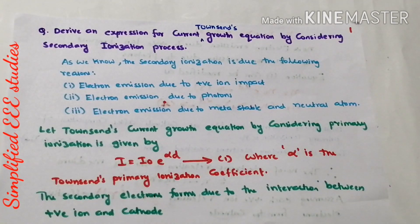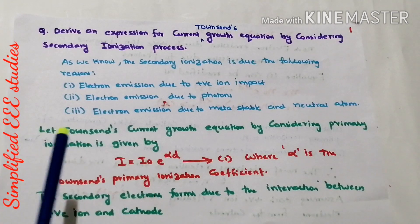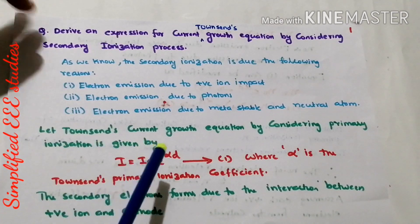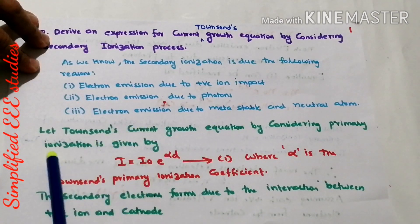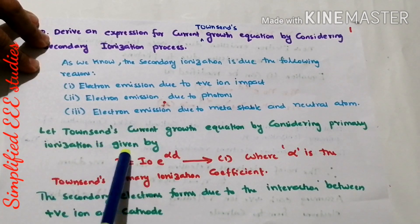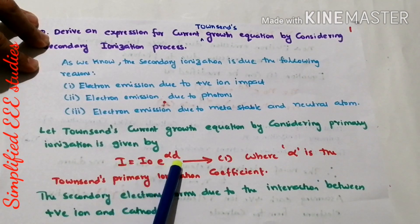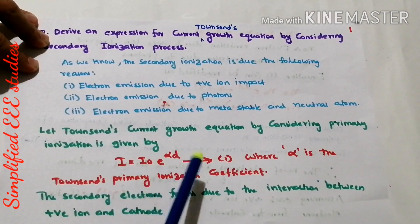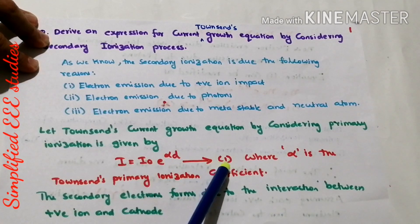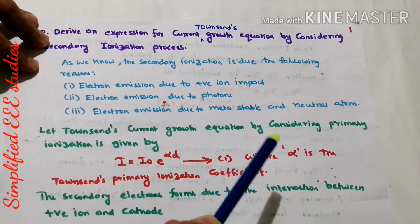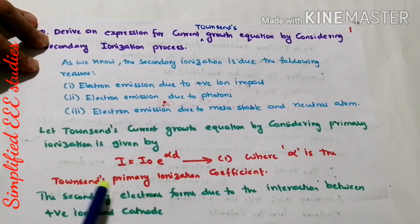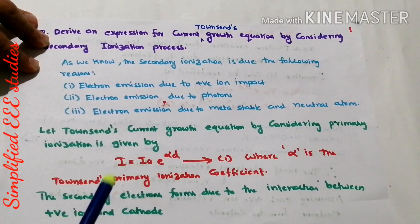We have already derived Townsend's current growth equation by considering the primary ionization process, and the expression is given by i = i₀·e^(αd). Please call this equation number 1. Here, alpha (α) is known as Townsend's primary ionization coefficient. We have already defined what is meant by alpha.